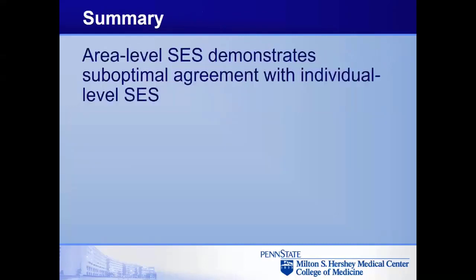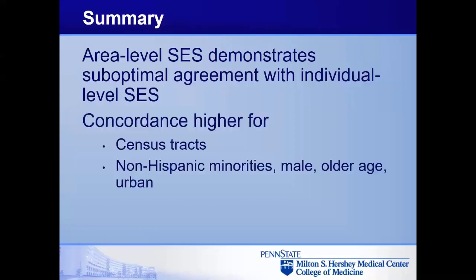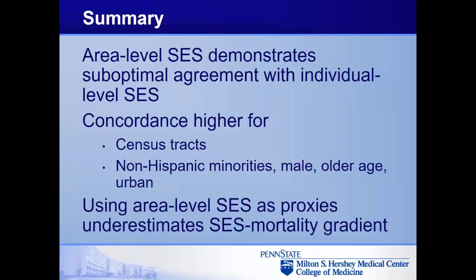In summary, area-level measures of SES are not great at predicting individual-level SES and demonstrate suboptimal agreement with individual-level measures. The concordance is actually higher for census tracts versus counties and for some subgroups including non-Hispanic minorities, males, people who are older, and those living in urban communities. Using these area-level measures as proxies for individual-level SES really underestimates the relationship between SES and mortality.